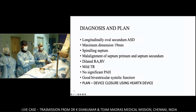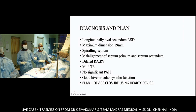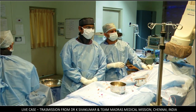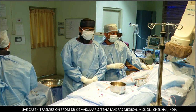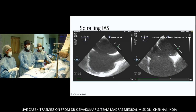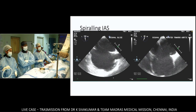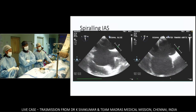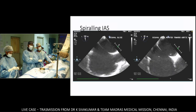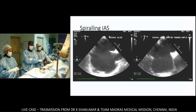The final dimension is a 19-millimeter ASD, longitudinally oval, with a spiraling septum and malalignment of the primum septum. There is RARV volume overload with mild TR and no significant pulmonary hypertension. The septum primum, coming from the inferior vena cava area, is slightly deviated more towards the left atrium, closer to the probe, whereas the limbus representing the septum secundum is slightly more towards the right atrium — mild malalignment.